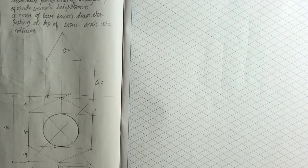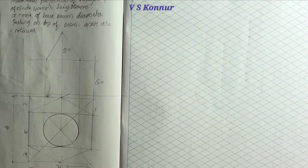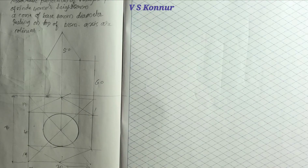This is problem number 11 - a hexagonal prism of 40mm side. There is a cone of 40mm diameter resting at the top of the prism. You have to imagine the prism first, draw it, and then draw the cone at the top of the prism.